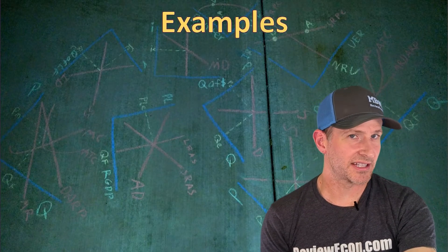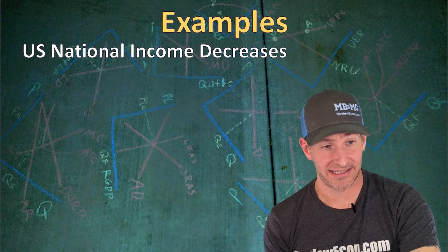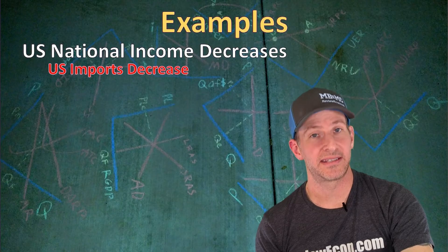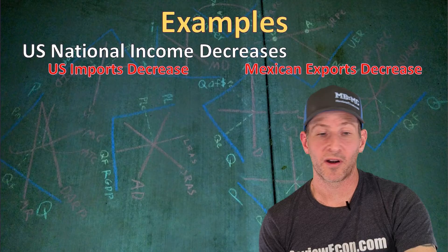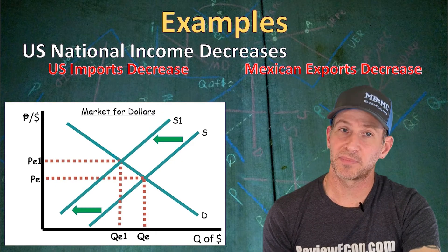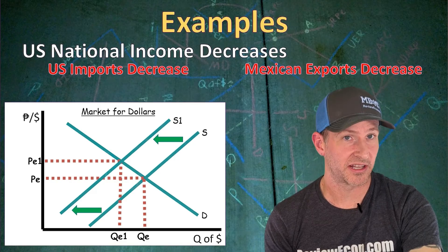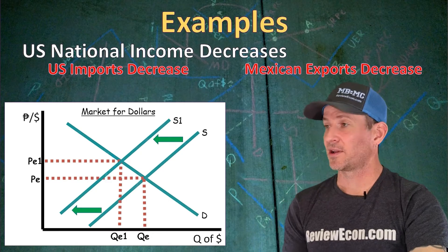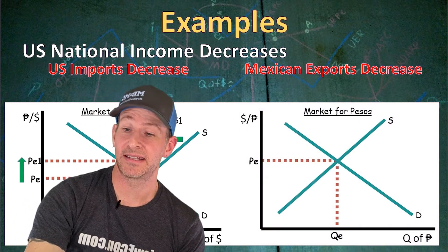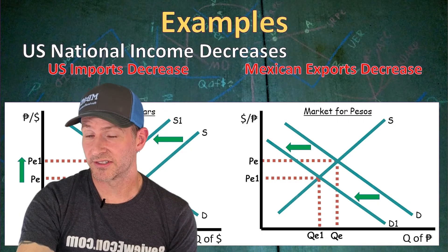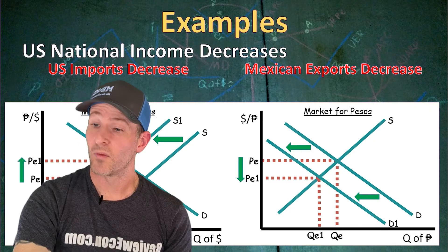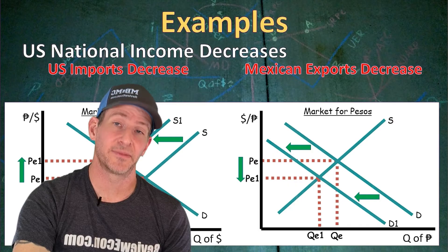Example one: if U.S. national income (GDP) decreases, we buy fewer goods and services including imports from other countries. Mexico, a major trade partner, will see decreased exports. In the market for U.S. dollars, we see a decrease in the supply of dollars as U.S. consumers buy fewer Mexican goods. That decrease in supply increases the equilibrium exchange rate — the U.S. dollar appreciates. In the market for Mexican pesos, there's a decrease in demand for pesos, so the peso depreciates. When one currency appreciates, the comparison currency depreciates; when one supply shifts left, the other's demand shifts left.